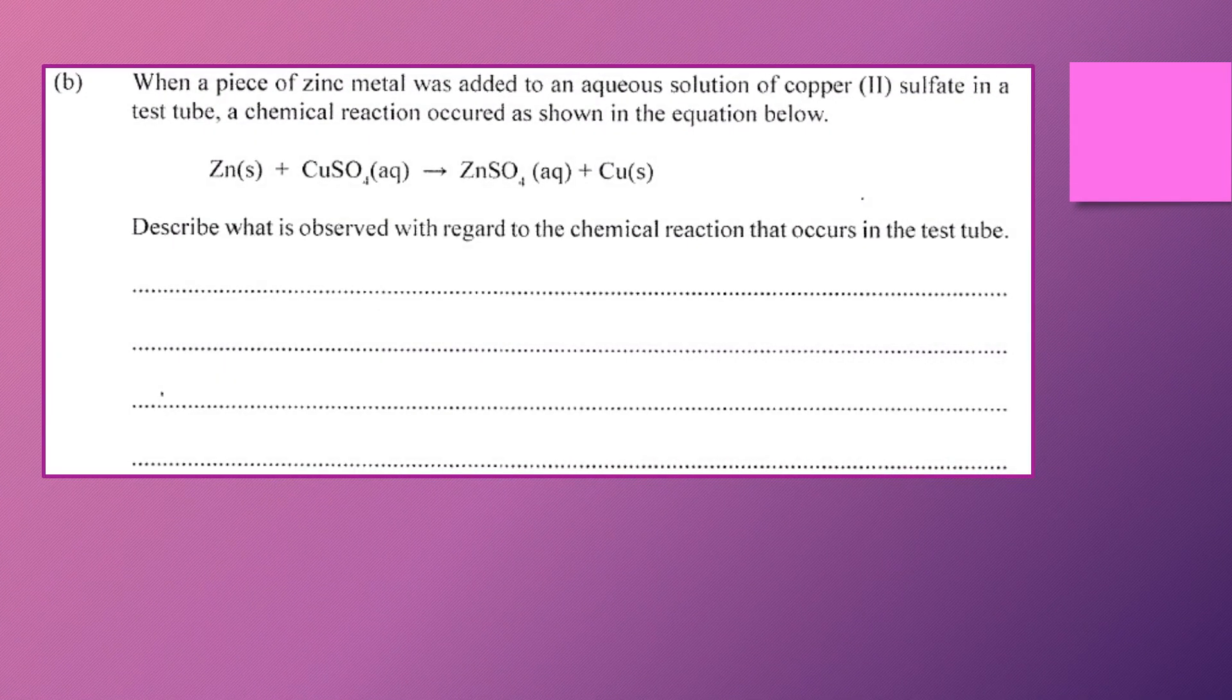The question then asks us to consider a piece of zinc metal being added to a solution of copper(II) sulfate in a test tube, and we are given the equation for what is actually happening there. Zinc solid plus copper sulfate aqueous produces zinc sulfate aqueous plus copper solid. So we're asked to describe what would be observed in a reaction like that.